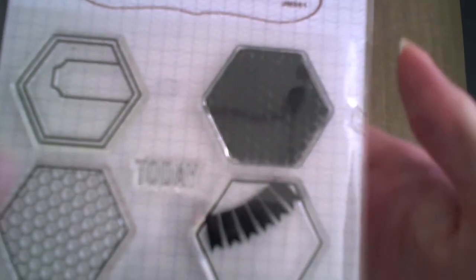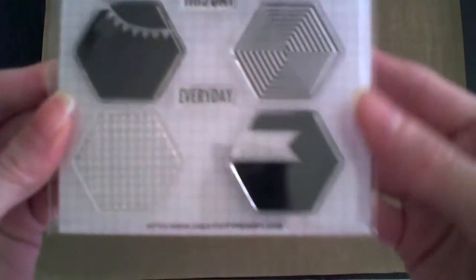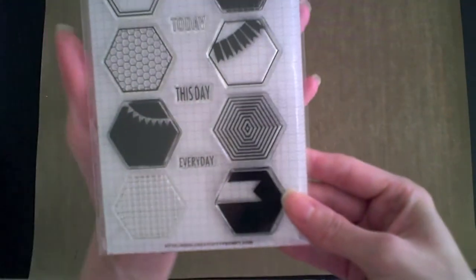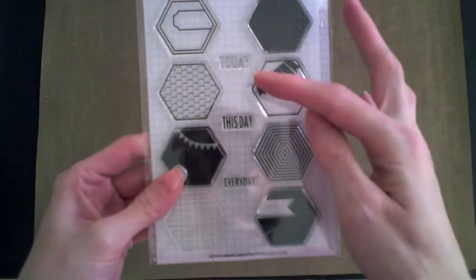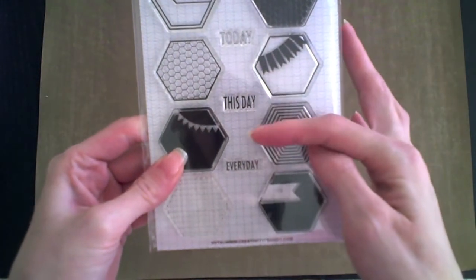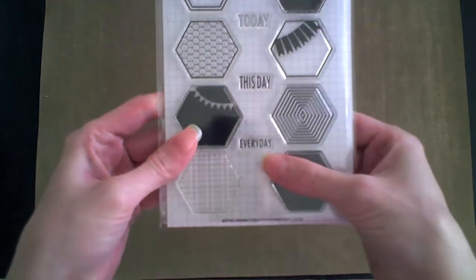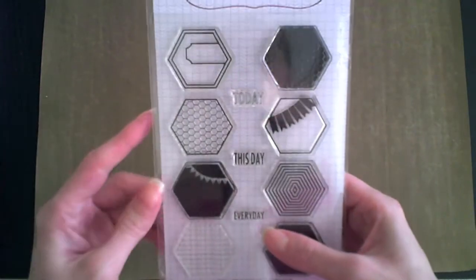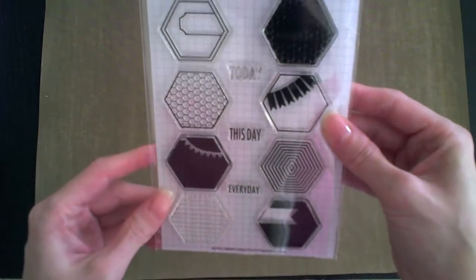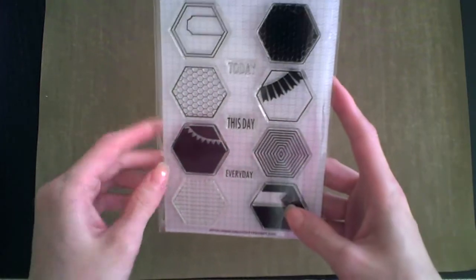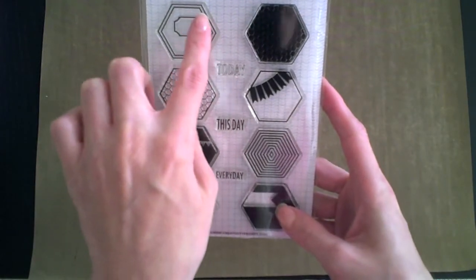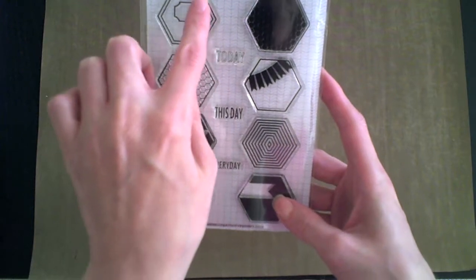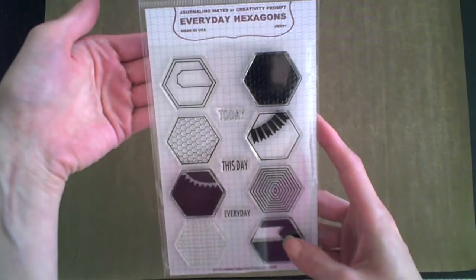I'll show you up close the negative hexagon design, you'll see it better when I actually stamp with it. It also has three text stamps: today, this day, and every day. It's great to use with the banner and label stamp, but you can also use it with any other stamp.